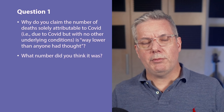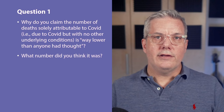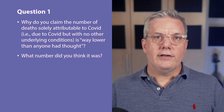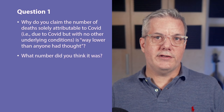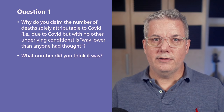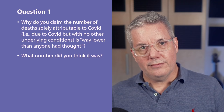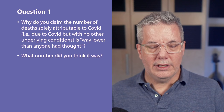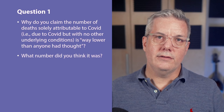People die with pre-existing conditions all the time — people die of all sorts of things with pre-existing conditions. As people get older, they have more pre-existing conditions. If we take people who die of anything, a large number of them will have pre-existing conditions. If we look at the same ONS data from previous years — 2017 through 2019 — a lot of people who died prior to COVID had pre-existing conditions. Why should COVID be any different? Why is this number a big deal?